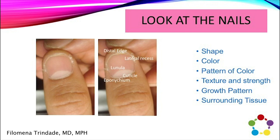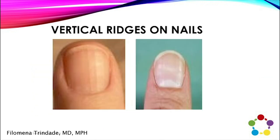Nails tell a story. Enhanced longitudinal ridges are associated with low HCl and low B vitamins, particularly B6. If you see enhanced longitudinal lines, that tells me there's low HCl, and then I have to figure out why — because if you have low HCl, you can't break down your proteins and food very well, so you'll have less keratin available for the nails. White spots on the nails are associated with low zinc. Also look at whether the nail is soft, chipping, and what's going on with its texture.